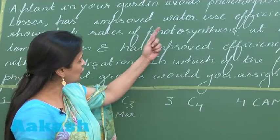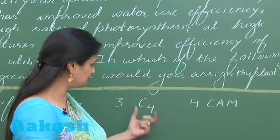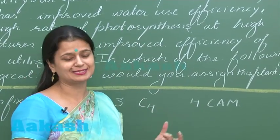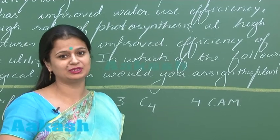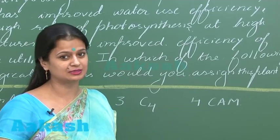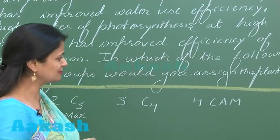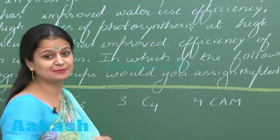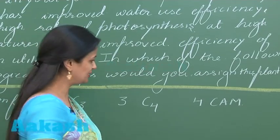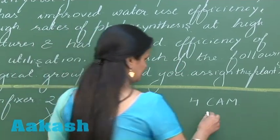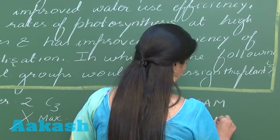If we talk about water utilization efficiency, C4 plants as well as CAM plants can both prevent water loss. However, maximum water utilization efficiency is with the C4 plants.